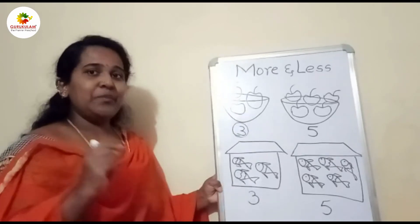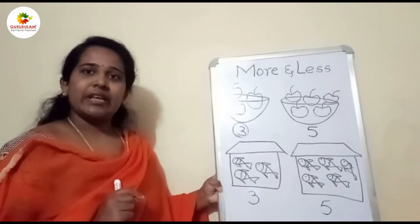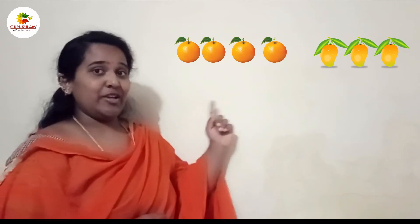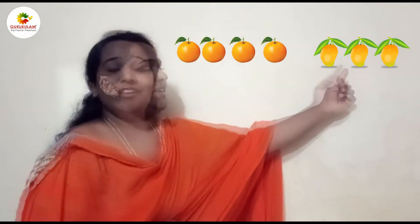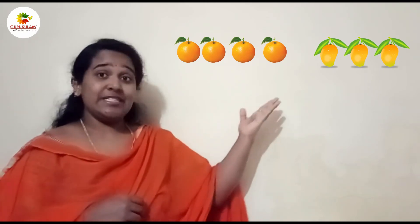Understood? Okay children, let's count. How many oranges are there here? One, two, three, four. We have four oranges. Okay, how many mangoes are there? Let's see: one, two, three - three mangoes. Okay, now tell me which fruit is more, which fruit is less? Yes children, correct, good job!